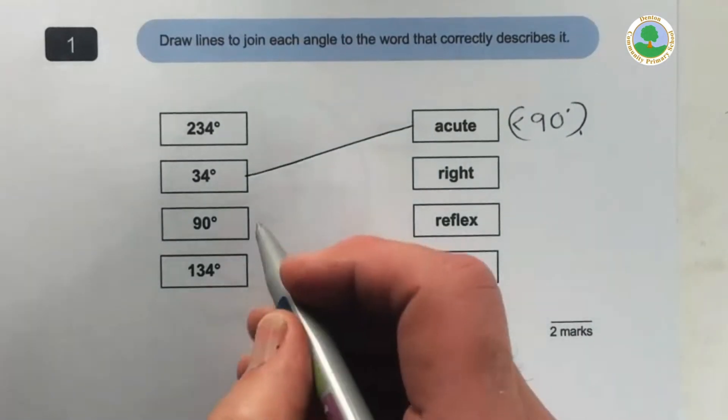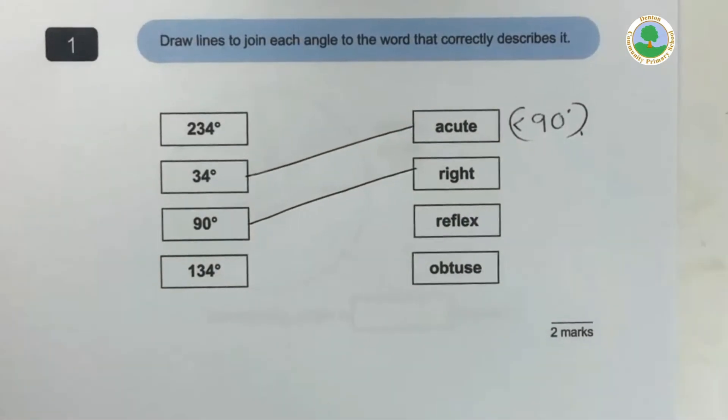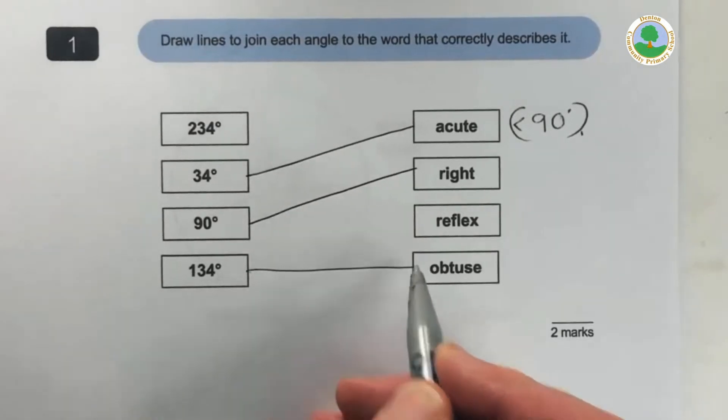Now 90, of course, is a right angle, so that's nice and easy. And then slightly bigger than that, an obtuse angle, anything bigger than 90, a turn that's more than a right angle but not an entire half turn, is an obtuse. So that one there is obtuse, 134 degrees.